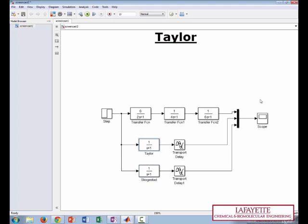Let's do the Taylor one first. For a Taylor FOPDT, the gain of the process is still the gain of the FOPDT. Therefore, k equals 6.